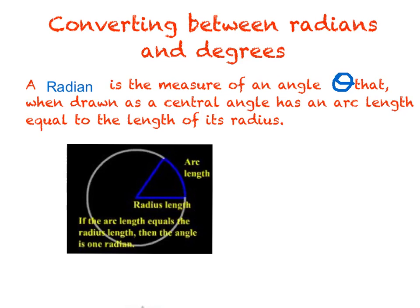So feel free to pause it and take your time here. A radian is the measure of an angle theta that, when drawn as a central angle, has an arc length equal to the length of its radius.